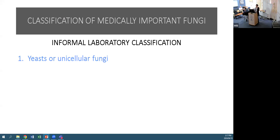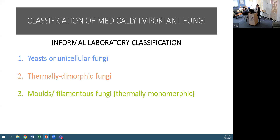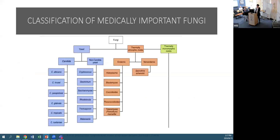We divide this group into yeasts or unicellular fungi, thermally dimorphic fungi, and then moulds and filamentous fungi which are thermally monomorphic. I'll just briefly put up this diagram which nicely depicts this informal classification.